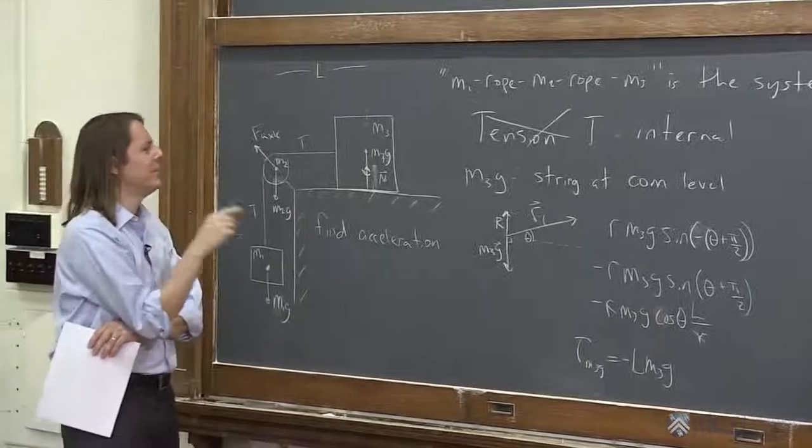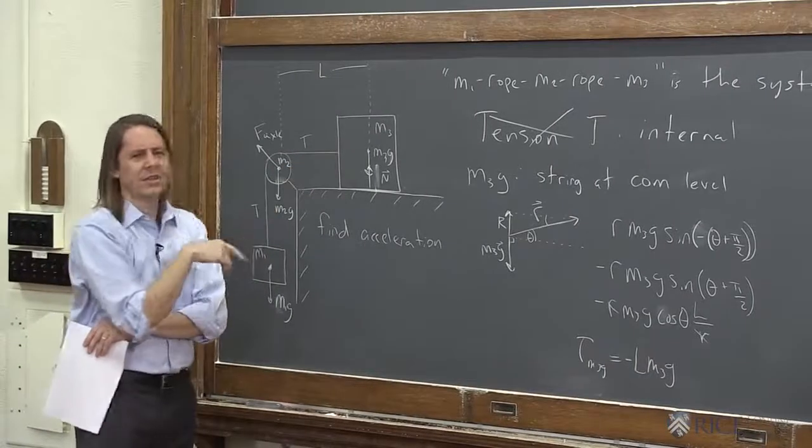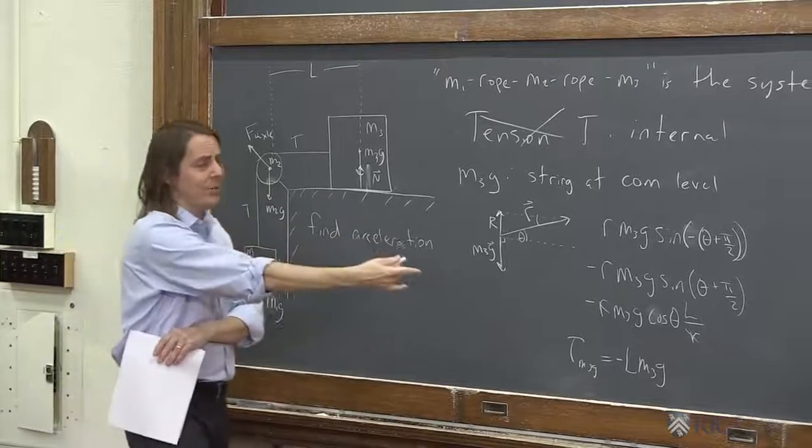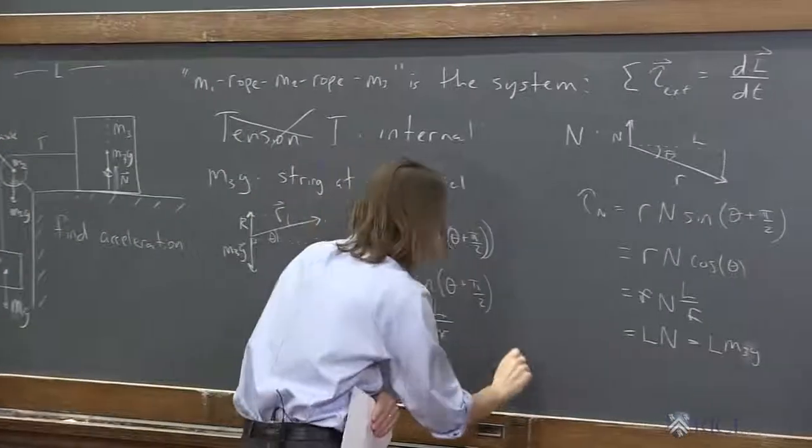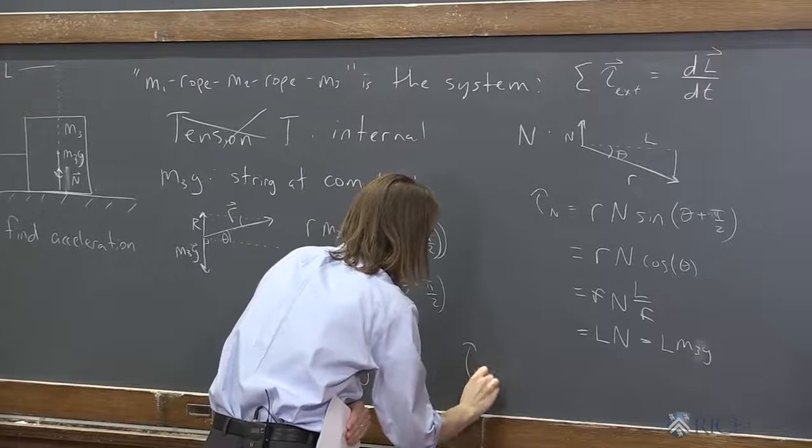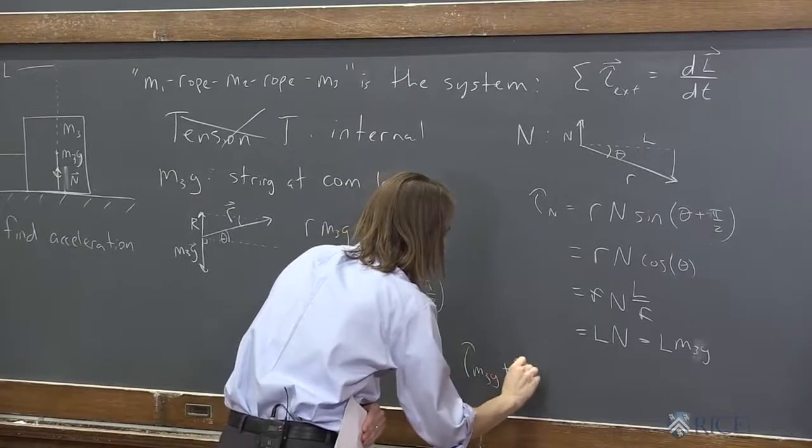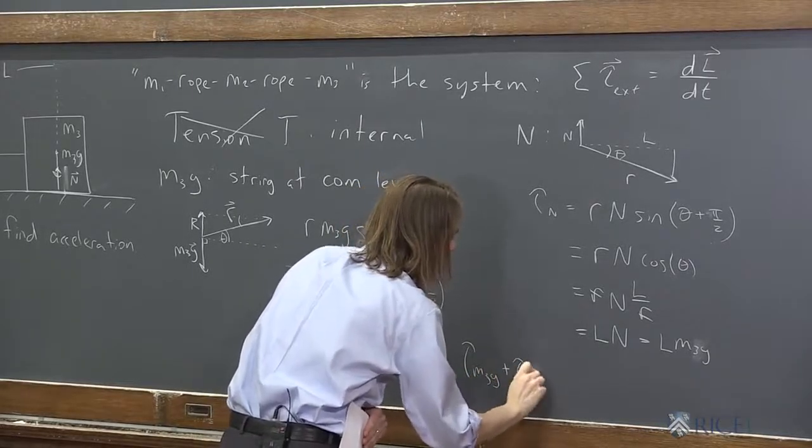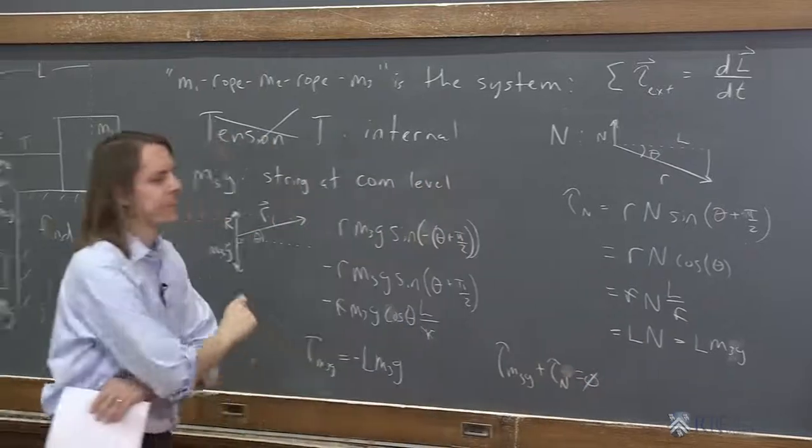So back to the first thing we said. Oh, the M3g and the Ns are going to cancel. But in terms of torques, do they cancel? Oh, they actually do. You can see that the torque due to the weight plus the torque due to N equals zero. They do cancel.